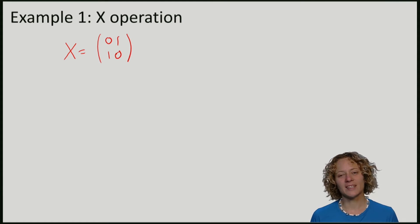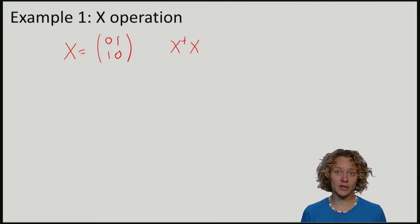Let's first verify that X is indeed unitary, so we have to compute X dagger X. Note that here X dagger, the conjugate transpose, is just equal to X.